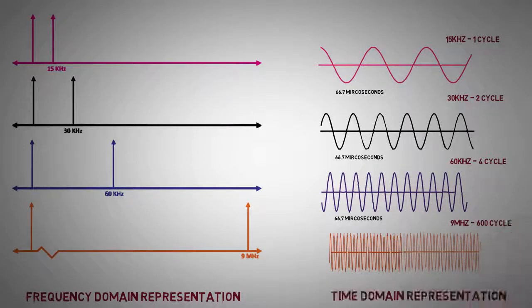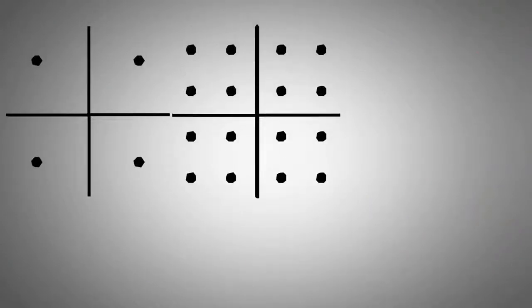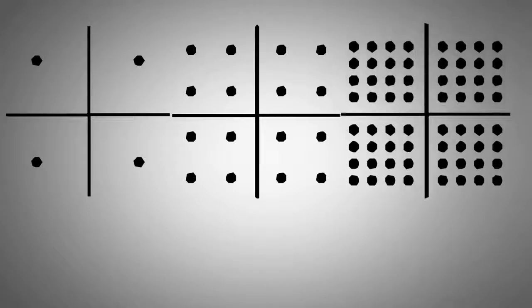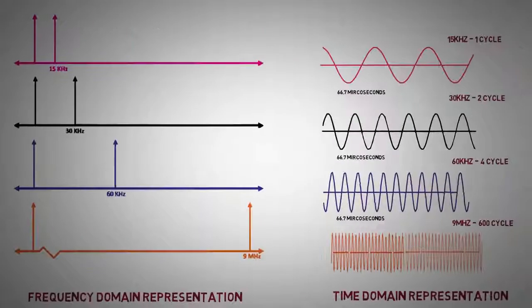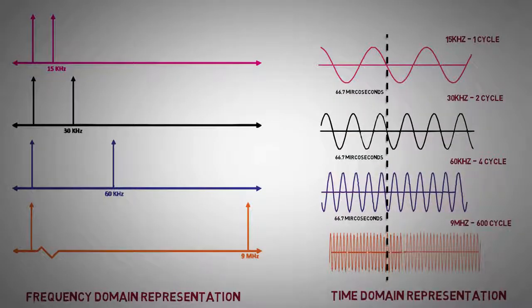However, in order to transmit data over these sub-carriers, they are loaded with modulation symbols that represent the constellation points of digital modulation schemes like QPSK and nth order QAM. Also, the symbol duration for each of these sub-carriers is always equal to 66.7 microseconds, which means that all these sub-carriers have a whole number of cycles in one symbol duration.